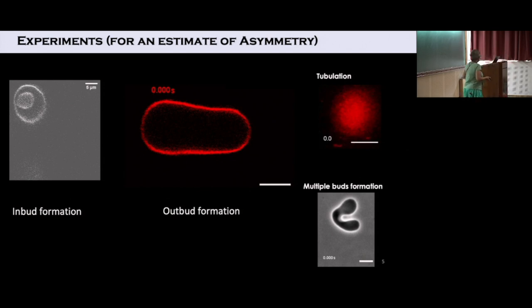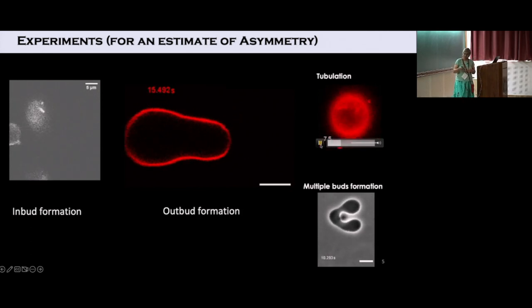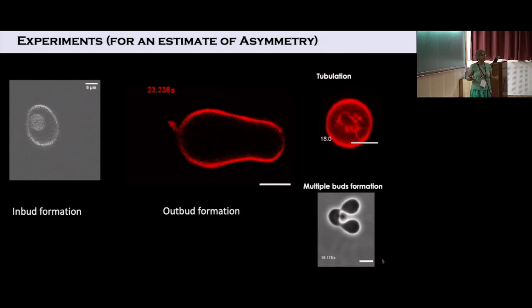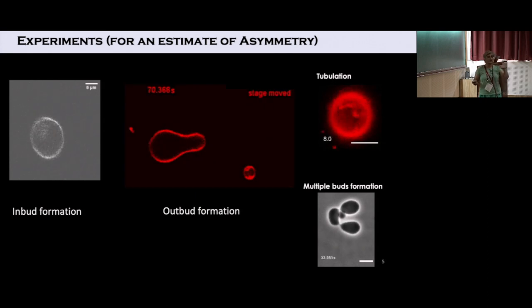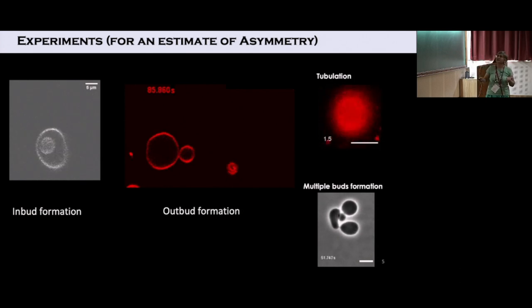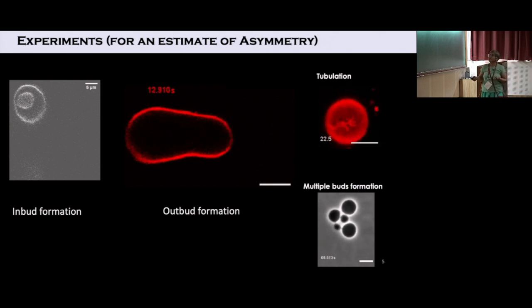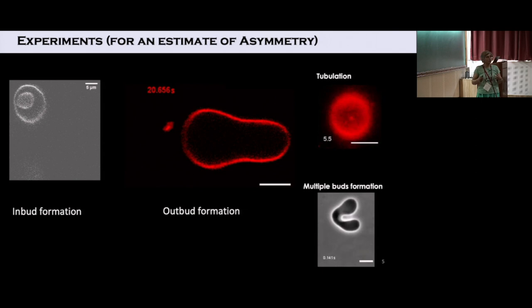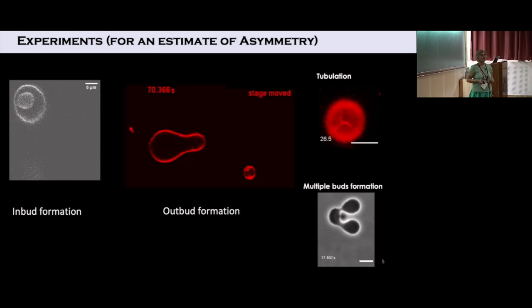These are some of the experimental data I want to show you that exhibit the shape transformation in the presence of asymmetry. In all of these conditions there is an asymmetry across the membrane. I'm going from top to the bottom, from one pole to the other, that's why it's coming in focus and going out of focus. There is an invert, an outward, many tubules inside, and in this case it bulges and forms buds outward. Many different kinds of things can happen based on what kind of asymmetry I create across the membrane.